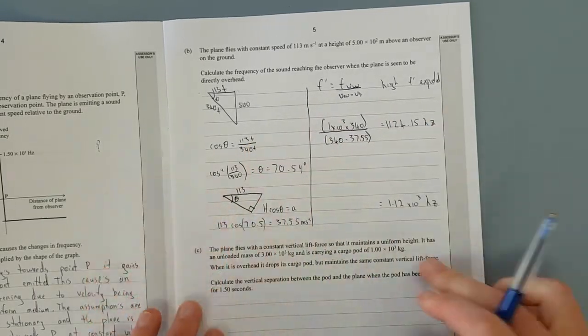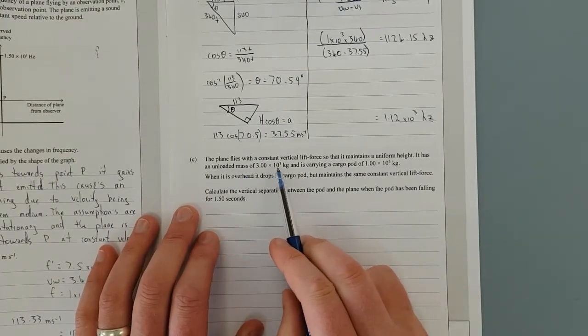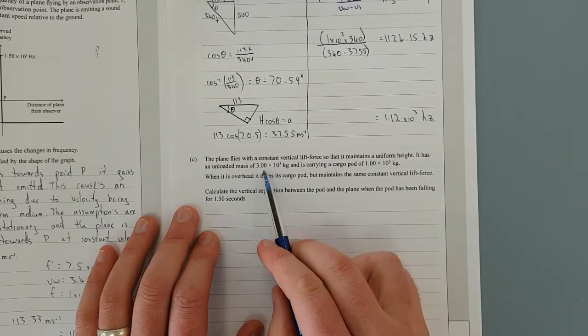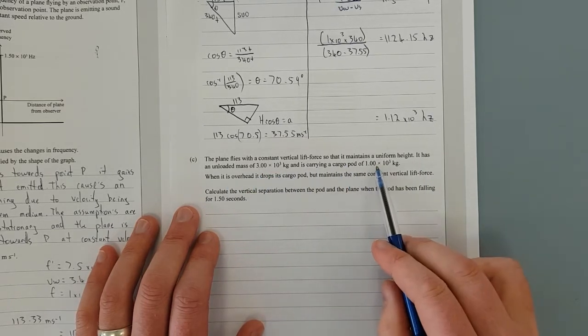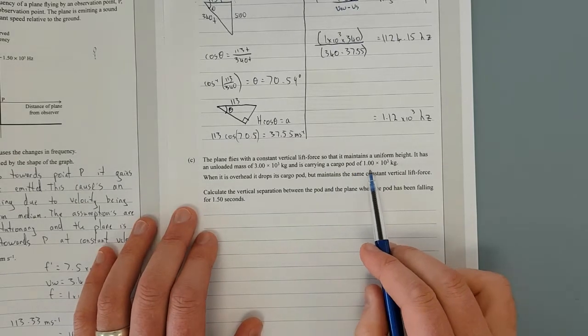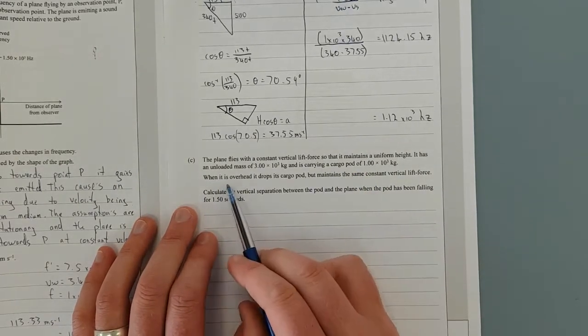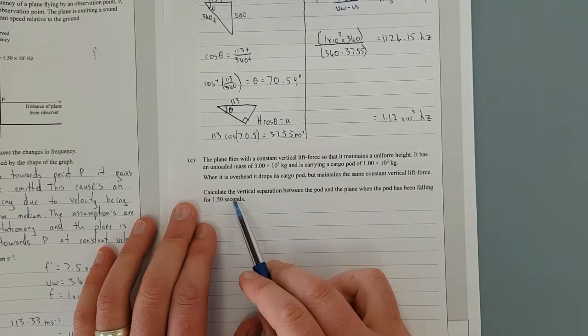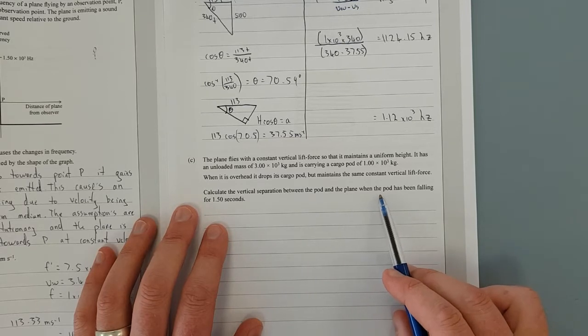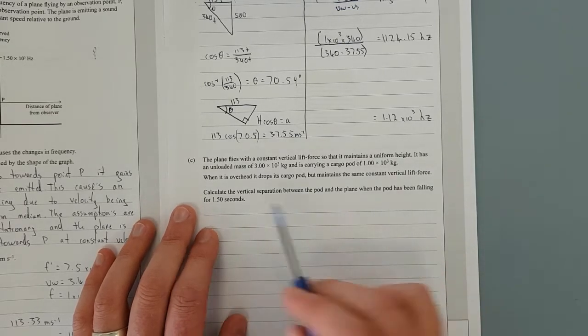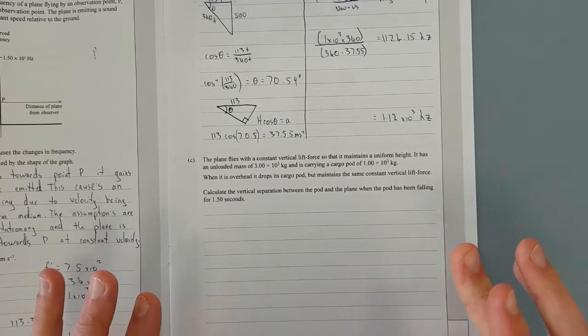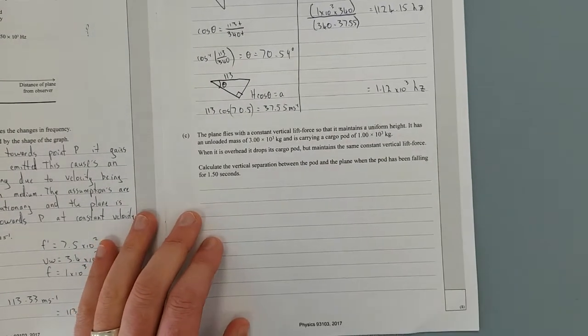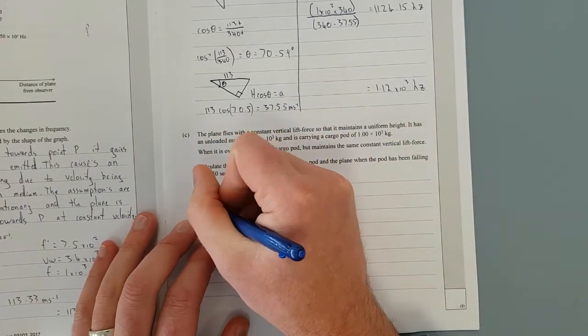The plane flies with a constant vertical lift force so that it maintains a uniform height. It's an unloaded mass of 3 metric tons and is carrying a cargo pod of 1000 kg when it is overhead. It drops a cargo pod but maintains the same vertical lift force. Calculate the vertical separation between the pod and the plane when the pod has been falling for 1.5 seconds. So this is going to be a mixture of Newton's laws, free body diagrams and kinematics.